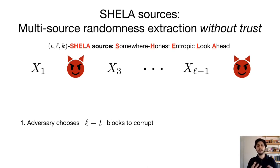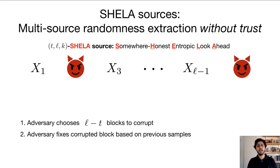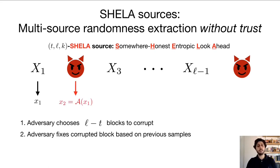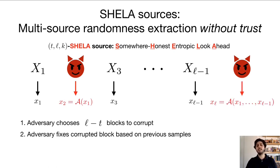When an adversary corrupts a block, he has full control over it and can set its value to be anything. On top of that, there's a sampling order on the SHELA source: sampling goes from x1 to xL, which means the adversary can fix the value of a corrupted block arbitrarily based on the previous samples. For example, we sample first from x1, and then x2 is controlled by the adversary, so it can be set to an arbitrary value based on x1. Then we sample from x3 and so on, and the adversary can set the value of a corrupted block to be an arbitrary function of all the previous samples. The outcome of this process is the output of the SHELA source.